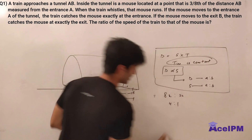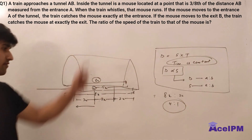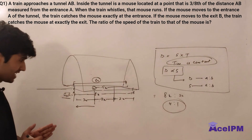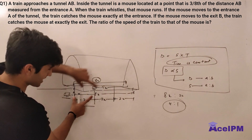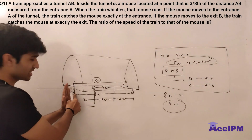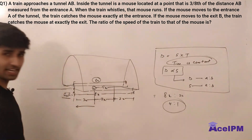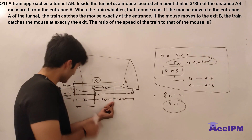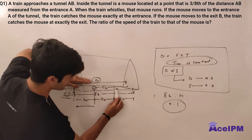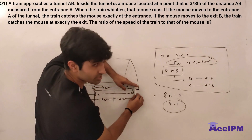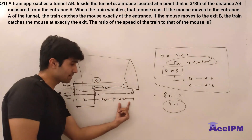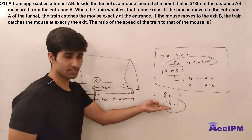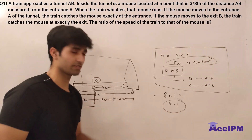Since time is constant, the ratio of distances is 8x to 2x, which is 4 to 1. So the ratio of speeds is also 4 to 1. To recap: when the train is at the entrance, the mouse runs the remaining 2x to the exit while the train covers the full tunnel length of 8x — confirming the speed ratio is 4 to 1.